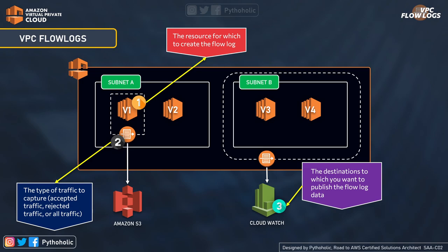Looking at the visual, subnet A has VPC flow logs enabled for a specific instance or network interface and publishes logs only for that. On the right-hand side, VPC flow logs have been enabled for the whole subnet, which covers all the instances V3 and V4 and the network interfaces that are part of that subnet.